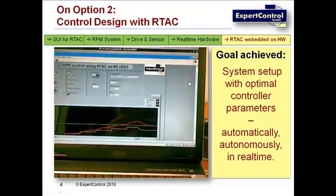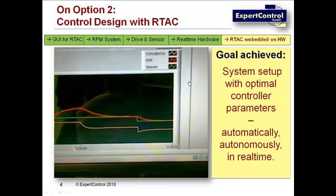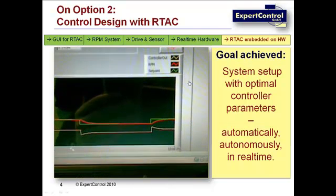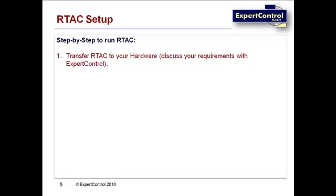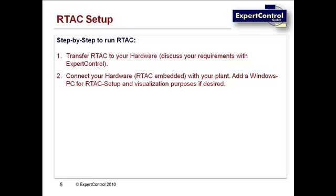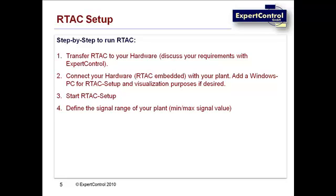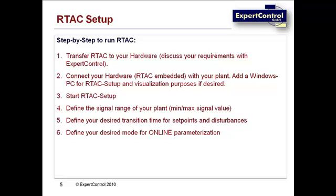All this has been done in one seamless step. Our apologies if ARTEC was too automatic and too fast, but you can restart the video at any time. Here are all the relevant pre-processing steps for the user: first, transfer ARTEC to your hardware — we will provide the suitable compiled object on request. Then connect your hardware with your plant and add a Windows PC for ARTEC setup and monitoring. Start the ARTEC setup, define the signal range of your plant, and define the desired speed of the final control system. Last but not least, you can define the desired mode for online parameterization. Then you are ready to run ARTEC as seen in the video.